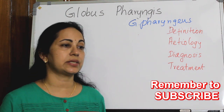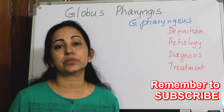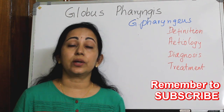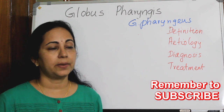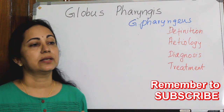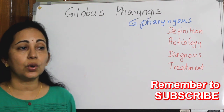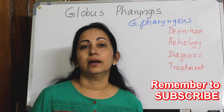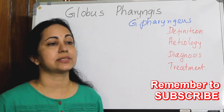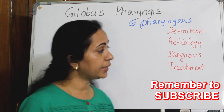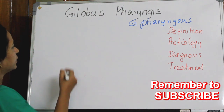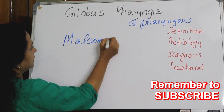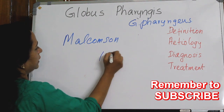Globus was noted by Hippocrates around 2500 years ago and was earlier called Globus hystericus. However, evidence shows that there is no higher score for hysteria in patients with Globus compared to healthy adults, so the term Globus hystericus was abandoned. The current term was coined by Malcomson in 1968.